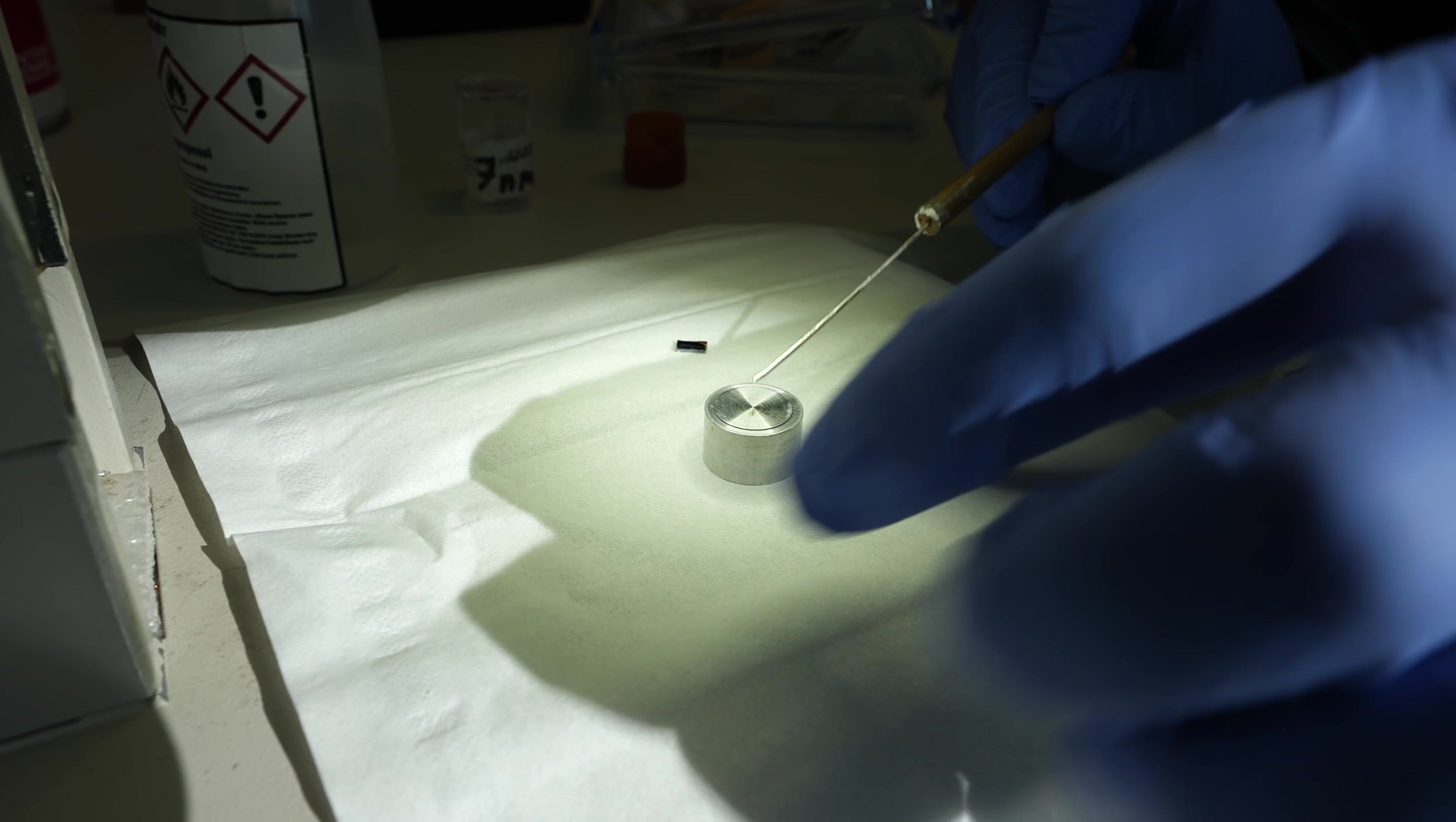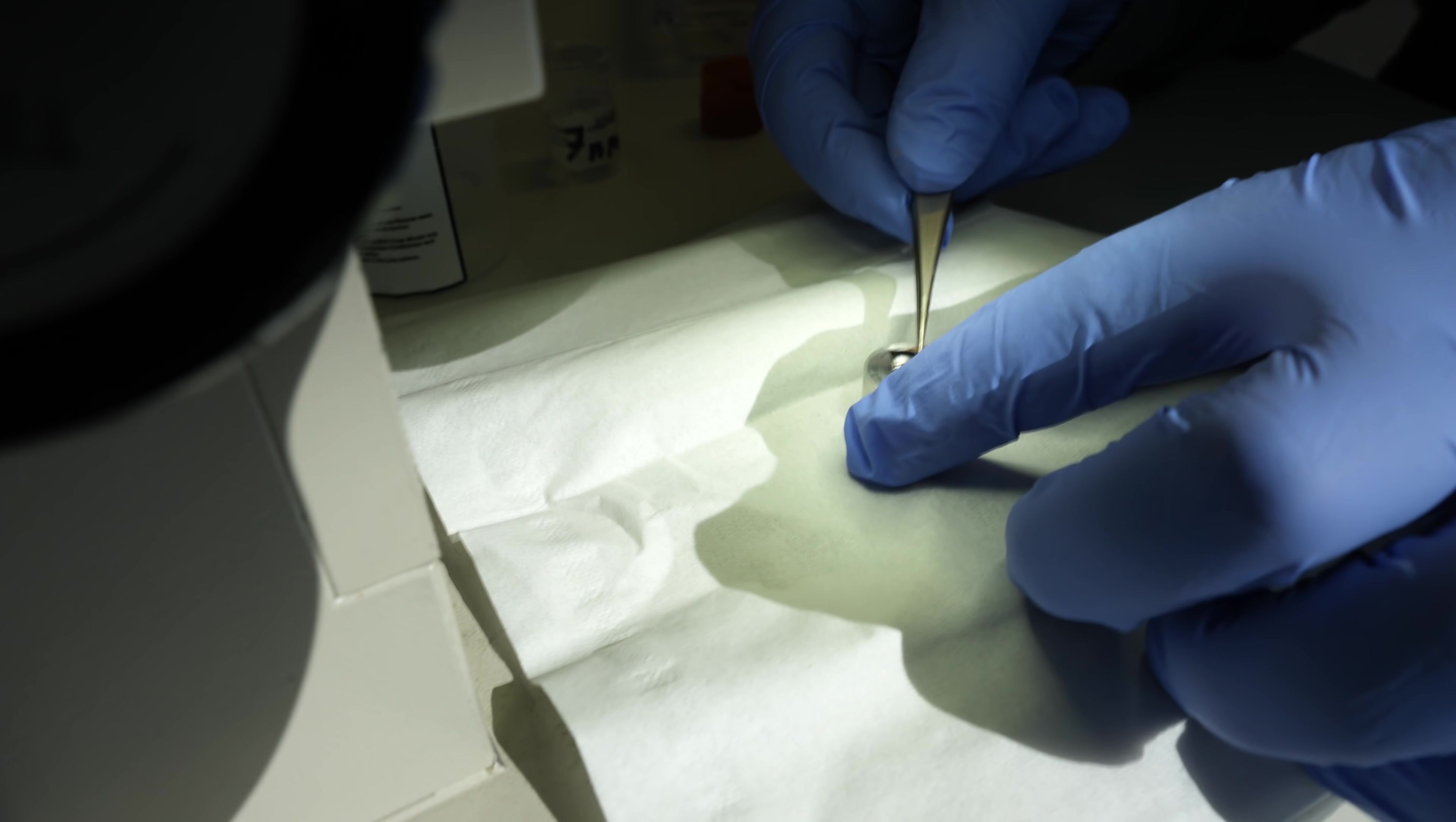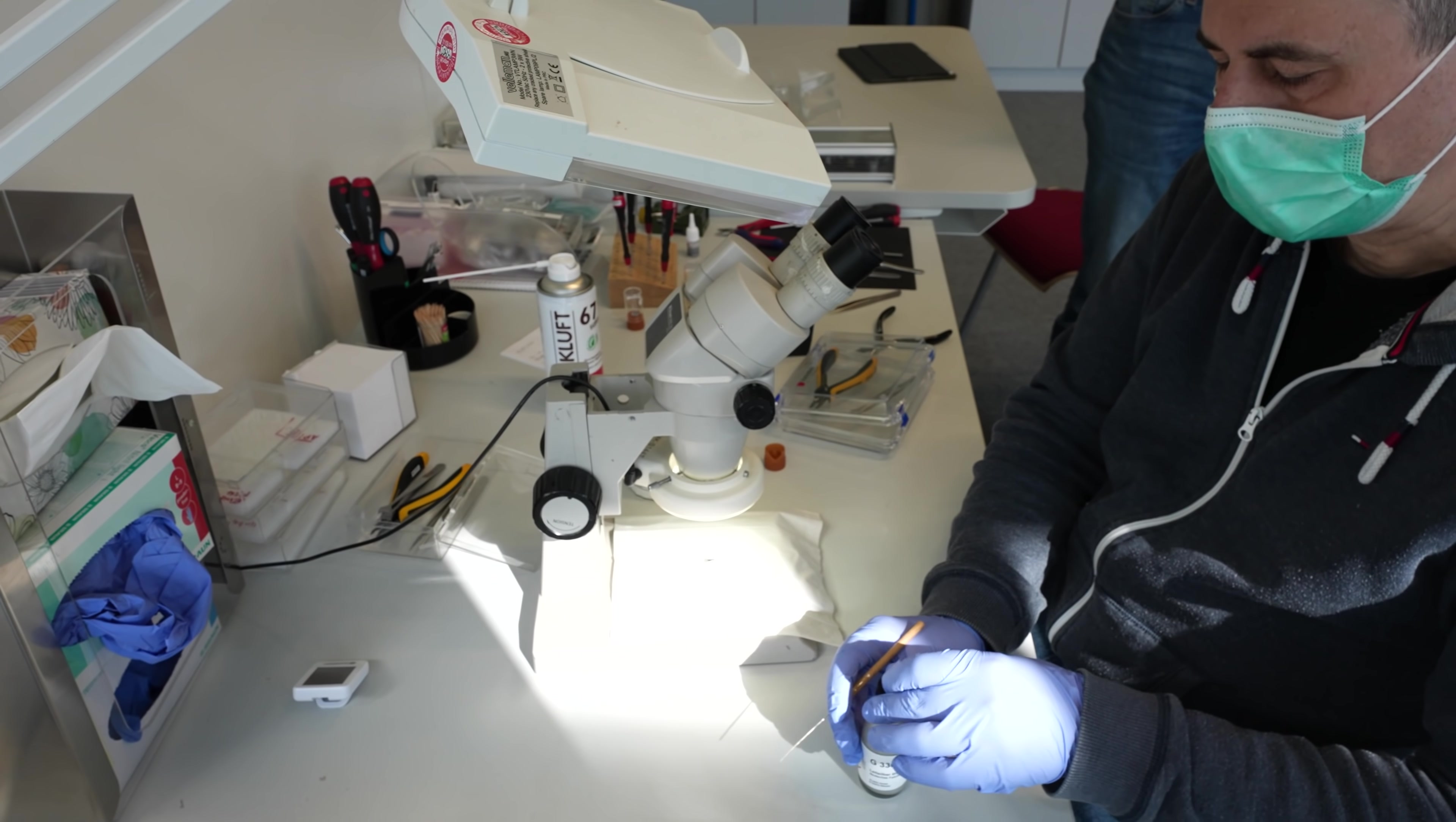Very similar to any other SEM preparation we first have to attach our chip with silver glue which is electrically conductive to the specimen holder. This is necessary so we can see anything inside the SEM. This chip has been polished and mechanically grinded which means that the chip itself does not work anymore but the single transistors or at least the ones we want to analyze still work.